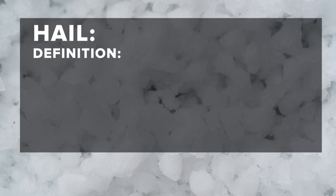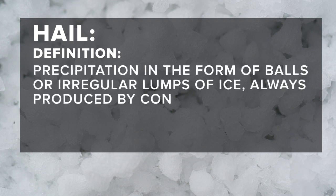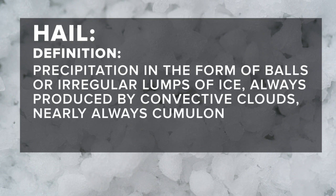According to the American Meteorological Society, hail is precipitation in the form of balls or irregular lumps of ice. Always produced by convective clouds, nearly always cumulonimbus.